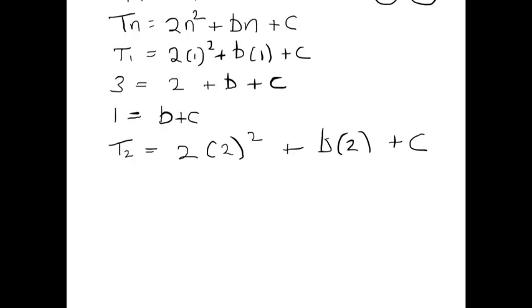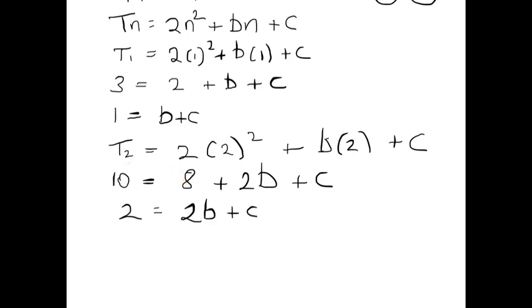To get the second equation, we set the second term equal to 2 times 2 squared plus b times 2 plus c — replacing n with 2. We know the second term of the sequence is 10. So 10 equals 8 plus 2b plus c. Bringing the 8 across gives us 10 minus 8, which is 2. So we're left with the equation 2 equals 2b plus c. That's our second equation. Our first equation was 1 equals b plus c.